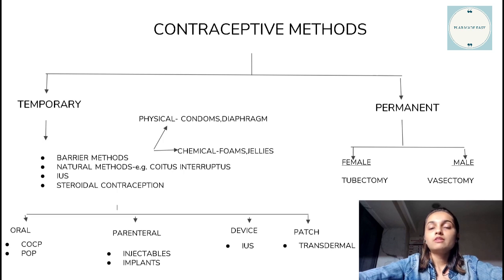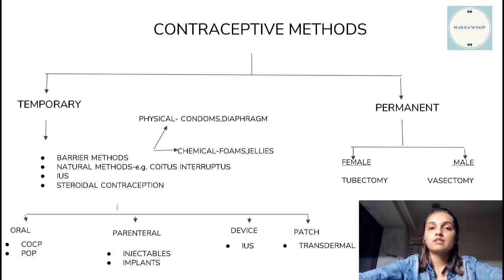The temporary methods are further divided into four categories: the barrier methods, the natural methods, the intrauterine contraceptive devices, and the steroidal contraception.